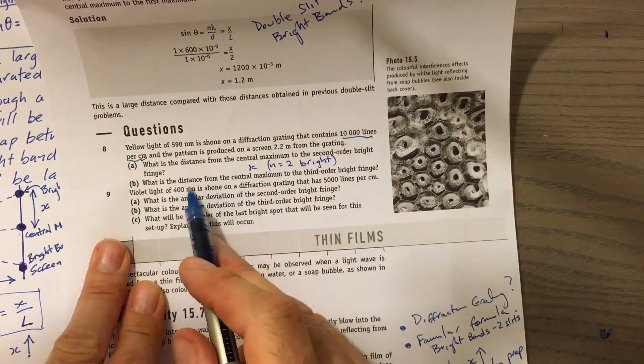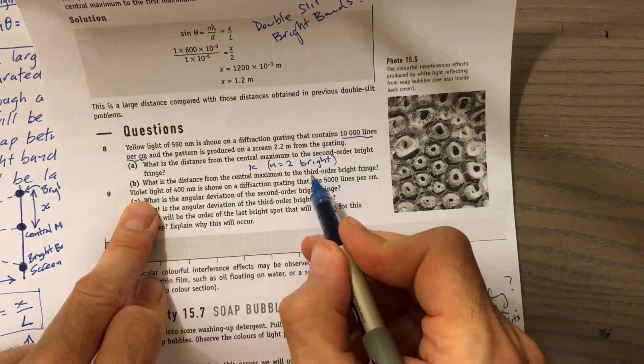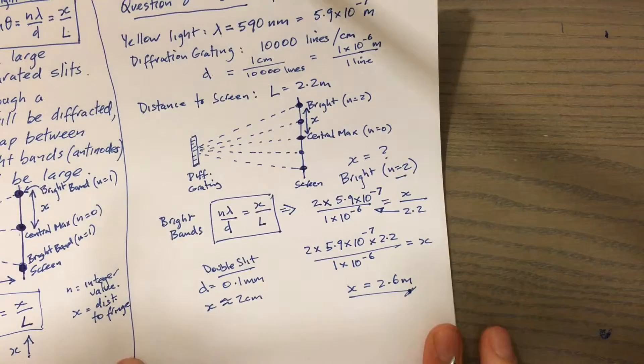Part b is really not much different. The only difference is we're looking at the third order bright fringe, so we're saying n equal to 3, and that's really the only thing that's different when we apply the formula.